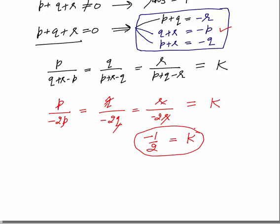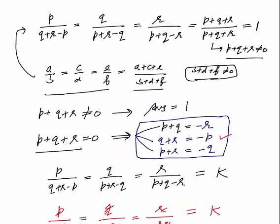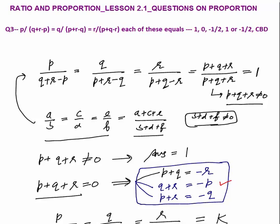The p, q, and r cancel out in each fraction, giving minus 1/2 for all three. So k equals minus 1/2. Therefore the answer is: either all three ratios equal 1 or minus 1/2, depending on whether p plus q plus r equals 0 or not. In exams, 99% of students give just 1 as the answer, but both cases must be considered.